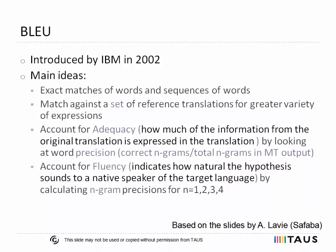BLEU, which stands for Bilingual Evaluation Understudy, was introduced by IBM in 2002. The main idea behind BLEU is that the closer a machine translation is to a professional human translation, the better it is. While BLEU is criticized within academic and industrial machine translation communities because in some cases it doesn't show good correlation with human judgment, it is still a de facto standard evaluation metric for many machine translation applications. This is probably due to its simplicity, universality, and speed. BLEU performs surface word-matching without considering linguistic information in the evaluation process.